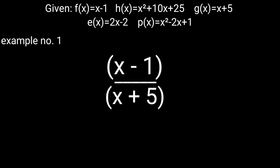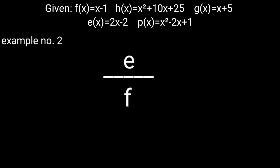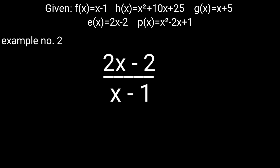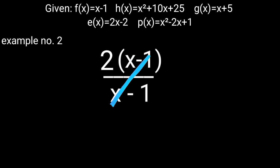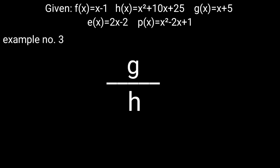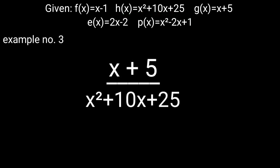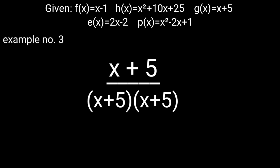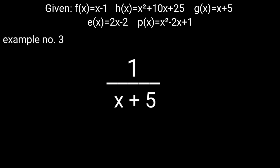Example 2: e over f — substitute e with 2x − 2 and f with x − 1. Factor the numerator: 2(x − 1) over (x − 1). Cancel (x − 1); the final answer is 2. Example 3: g over h — substitute: (x + 5) over (x² + 10x + 25). Factor the denominator as (x + 5)(x + 5). Cancel (x + 5) from numerator and denominator; the final answer is 1/(x + 5).